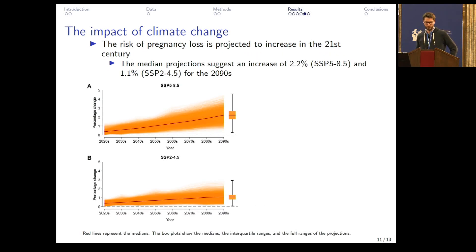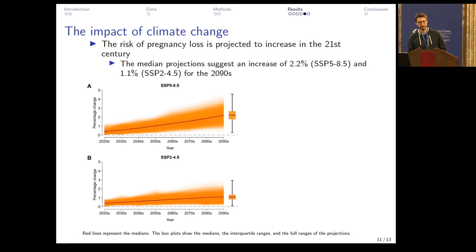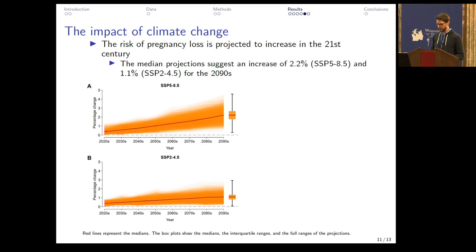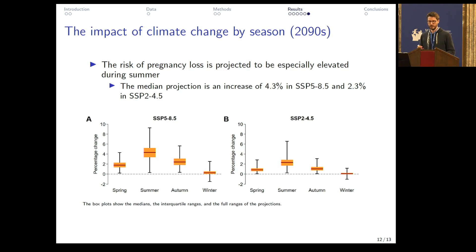Finally, the impact of climate change. We simply multiply the beta coefficients with the projected temperature changes. The risk of pregnancy loss will increase in the 21st century. For the last decade — the 2090s — the median projections show an increase of 2.2% in the worst-case climate scenario and 1.1% in the more optimistic climate scenario. Climate change affects the seasons unequally: the risk of pregnancy loss is unaffected during winter months, but in spring and autumn, and particularly in the summer months, it is projected to be substantially elevated.